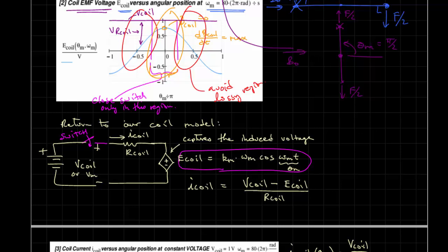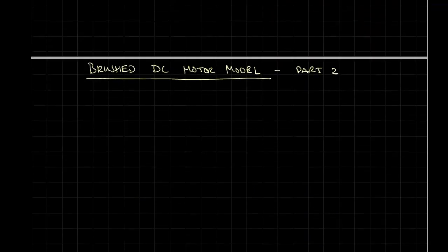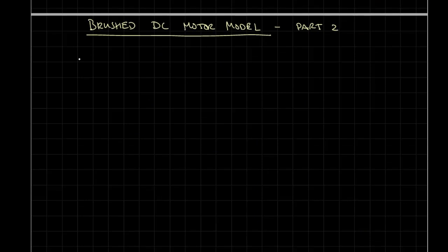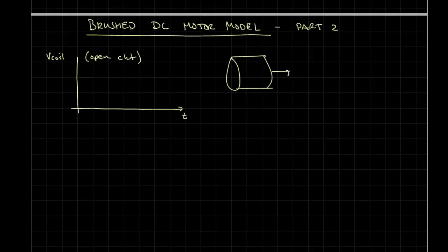If you take a DC motor, spin the shaft, and look at the voltage at the terminals, you would not see a sinusoidal voltage — you would in fact see a DC voltage. If you looked very carefully, you would see something like this: plotting V coil open circuit in time, with nothing connected to the motor terminals, spinning at some omega_m, measuring across the plus and minus terminals, you would have almost a DC voltage.